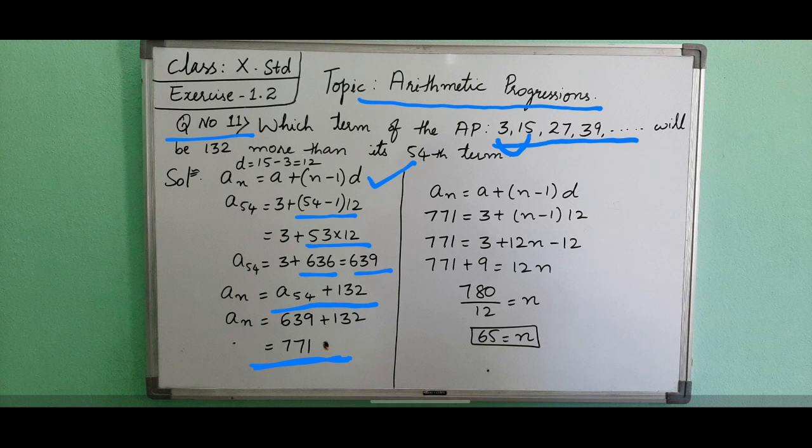So that's what we are finding here. an is equal to a plus (n minus 1) into d. an is 771, a is 3, and we have to find - keep the same - d is 12. 12 into n is 12n, and 12 into 1 is 12. Now 3 minus 12 is minus 9. When we shift minus 9, it becomes plus 9. 771 plus 9 is 780.